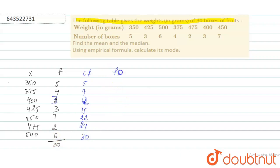Now what we will find out is fx. So fx equals to 1750, that is x into 5. Next is 1500, next is 1200, then comes 1275, 3150, 950, 3000, and total of this will be 12825.